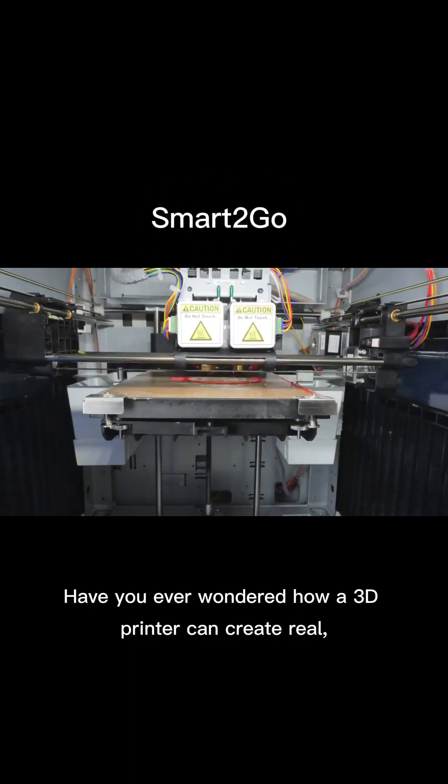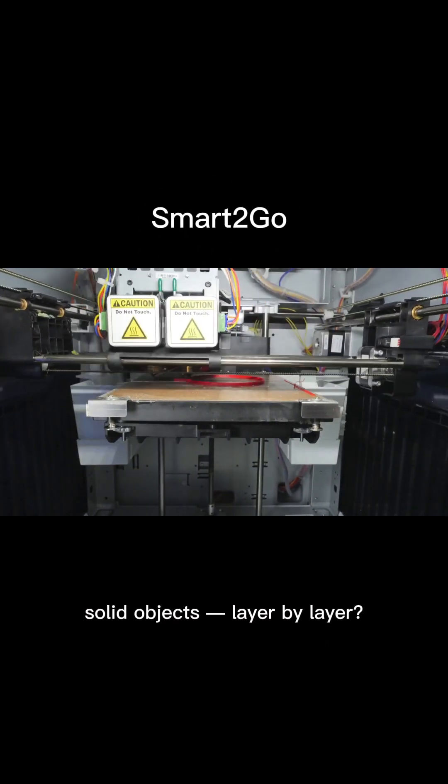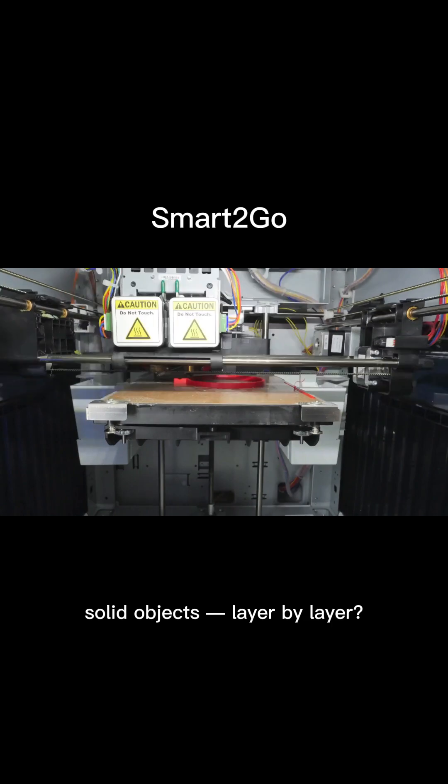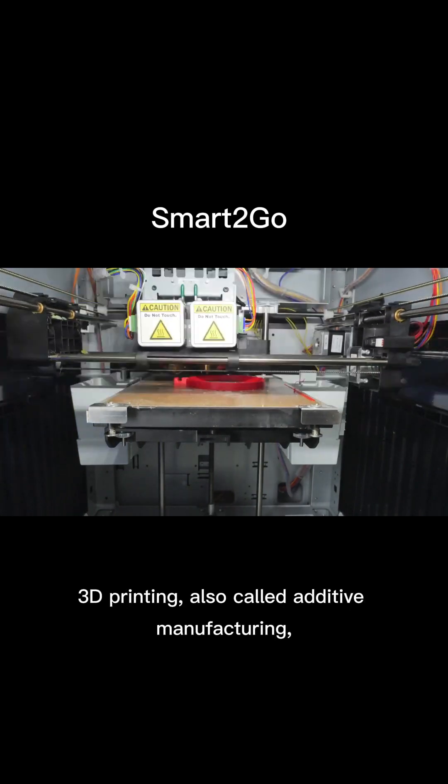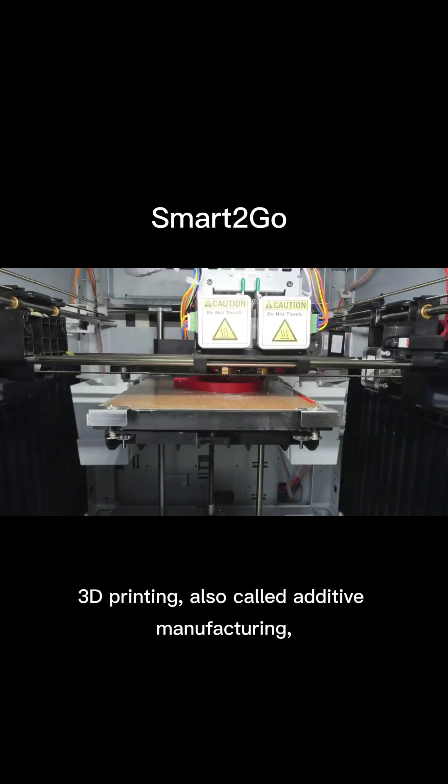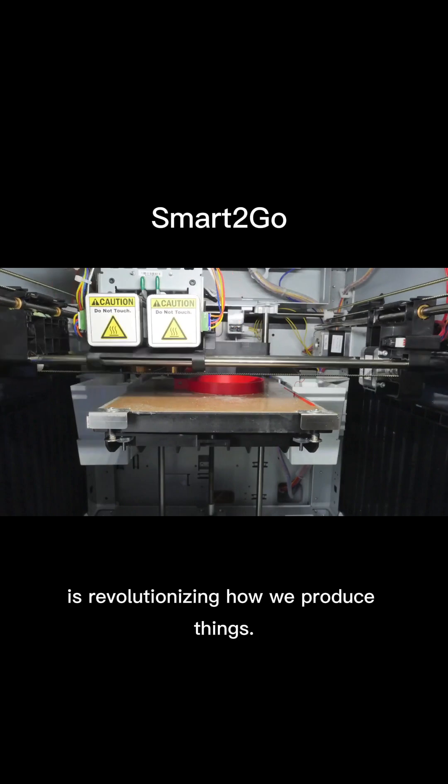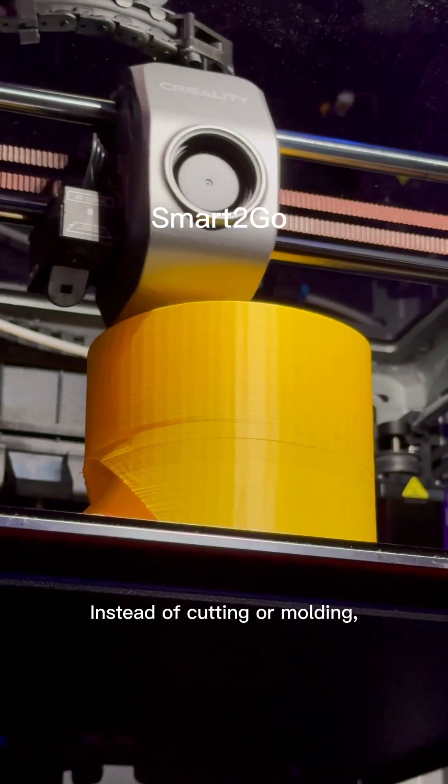Have you ever wondered how a 3D printer can create real, solid objects layer by layer? 3D printing, also called additive manufacturing, is revolutionizing how we produce things, instead of cutting or molding.